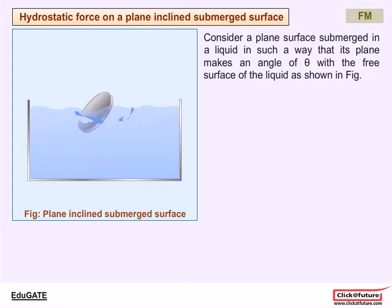Let dA be the elemental area of the surface in square meters, and h be the distance from the free surface in meters. The pressure acting on the elemental area is given by P = σgY sinθ, where Y is the distance measured from point O on the free surface.